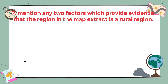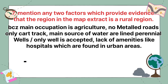Mention any two factors which provide evidence that the region in the map extract is a rural area. The main occupation here is agriculture. There are no metal roads, only cart tracks. The main source of water is a lined perennial well. There is also a lack of amenities like hospitals, which are found in urban areas.